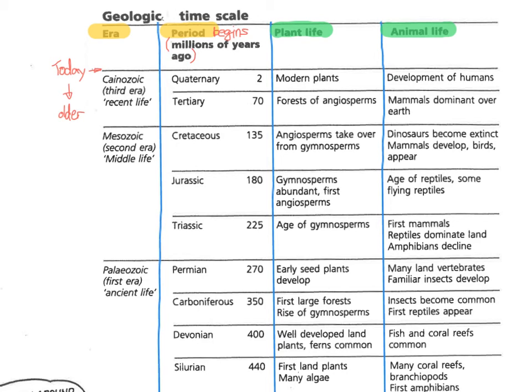Questions 7 to 11 on your worksheet actually refer to changes in life — in other words, evolutionary changes. Plant life is listed in one column and animal life in another. For those questions, you refer to those last two columns. That's it — go get them.